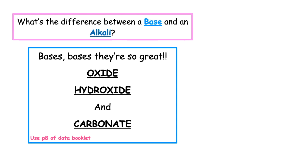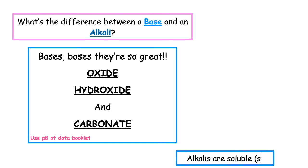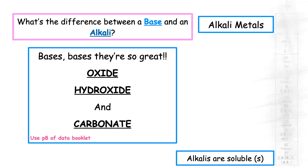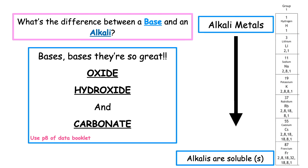The difference between a base and an alkali is that we have to use page 8 of our data booklet to look up the solubility of that particular base. An alkali is a substance which is soluble, which means that it can dissolve in water. A way to remember this is that Group 1 metals are known as the alkali metals, because they are all soluble and can dissolve in water to form alkalis.